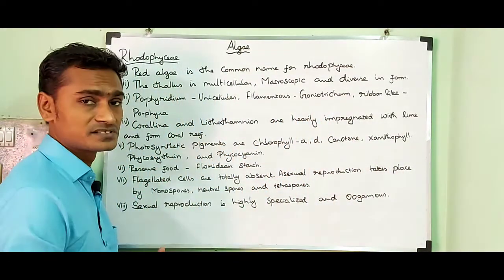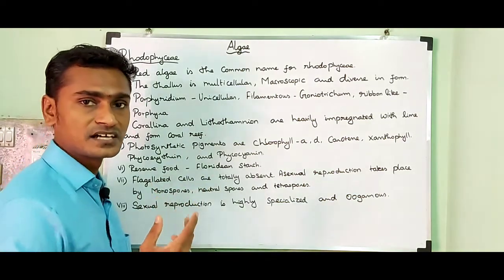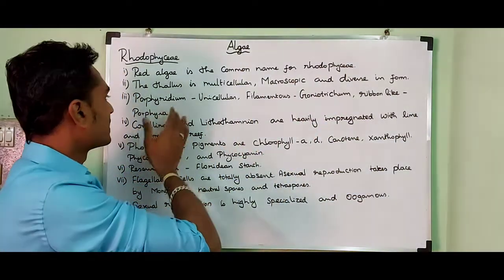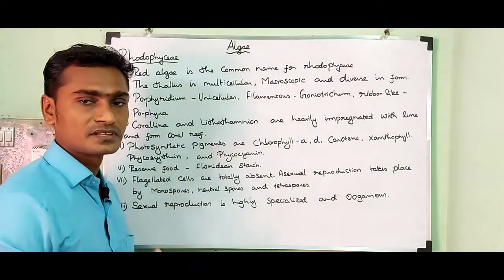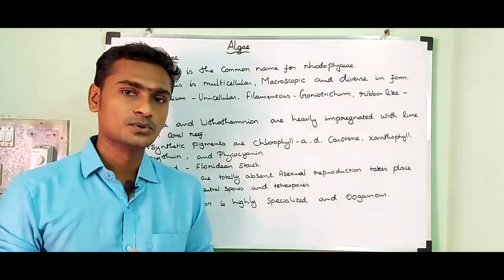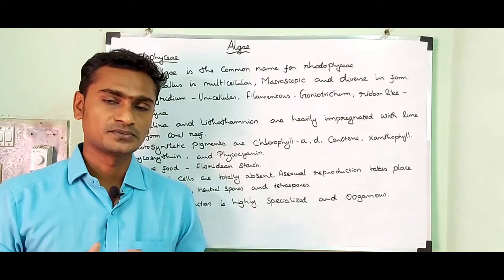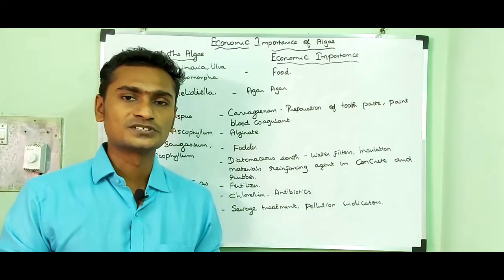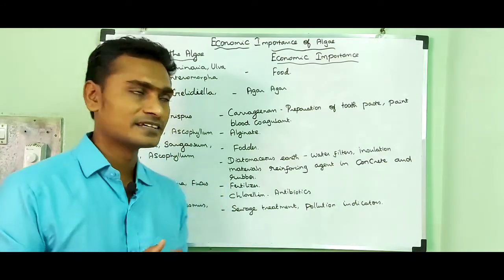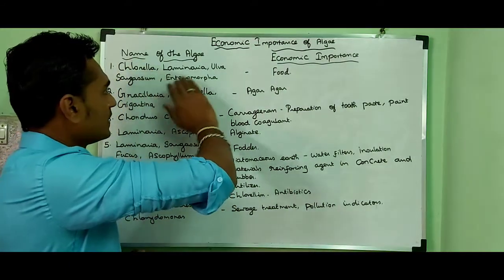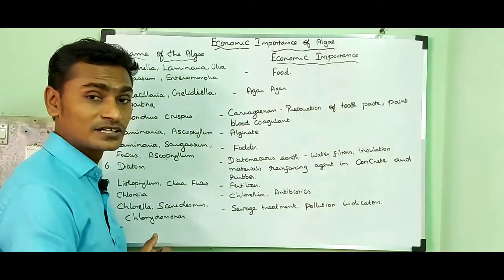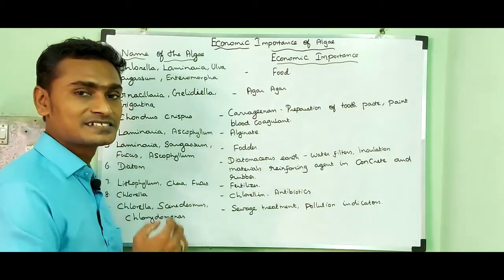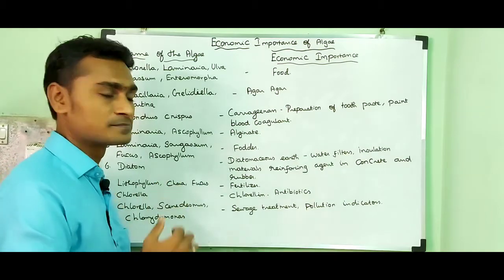Examples for Rhodophyceae are Gracilaria, Gelidium, Goniotrichum, Porphyra, Porphyridium, etc. Now, the economic importance of algae: algae like Sargassum, Chlorella, Laminaria, Ulva and Enteromorpha are used as food. In some islands, these algae are used to make delicious recipes.